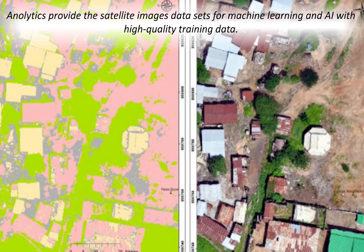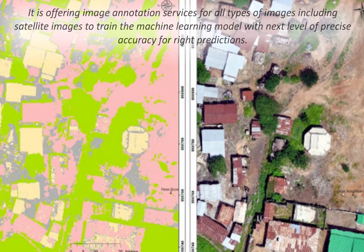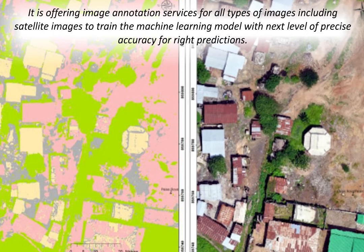Analytics provide satellite image datasets for machine learning and AI with high-quality training data. Image annotation services are offered for all types of images, including satellite images, to train machine learning models with a next level of precise accuracy for right predictions.